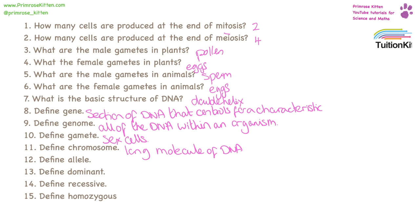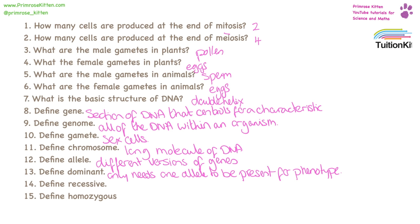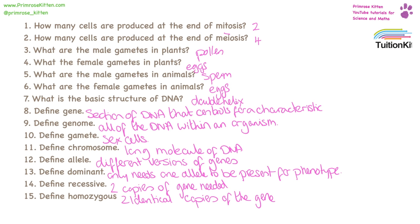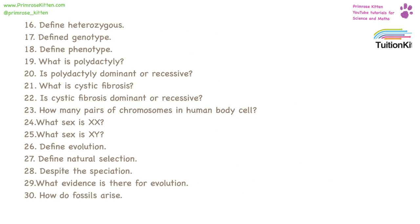Alleles are different versions of genes. If a gene is dominant, it only needs one allele to present it as the phenotype. If a characteristic is recessive, it needs two identical versions of the gene for it to present itself. Homozygous means it has two identical copies of the gene. Heterozygous means it has different copies of the same gene. Your genotype are the genes that you have. Your phenotype are the characteristics that you have.